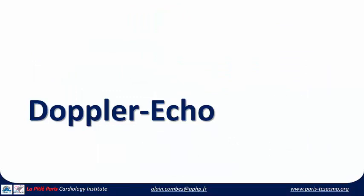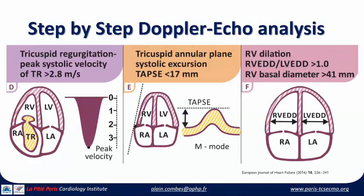When I take care of such patients, Doppler echocardiography is critical to diagnose the disease, evaluate its severity, and guide the treatment. There's a very nice paper published a couple of months ago in the European Journal of Heart Failure summarizing the steps to follow. In the step-by-step Doppler echo analysis, you will have dilation of the right ventricle leading to tricuspid regurgitation, and if RV failure is severe, the velocity of the tricuspid regurgitation will be over 2.8 meters per second. You might also measure the tricuspid annular plane systolic excursion — TAPSE.